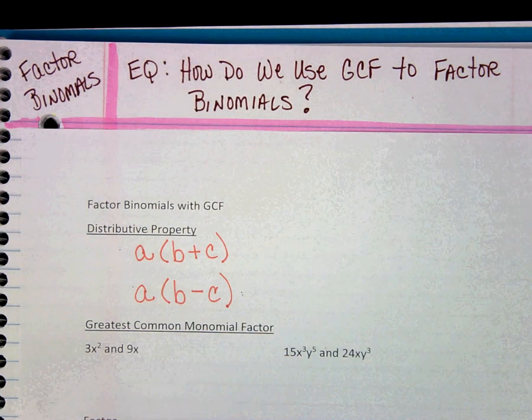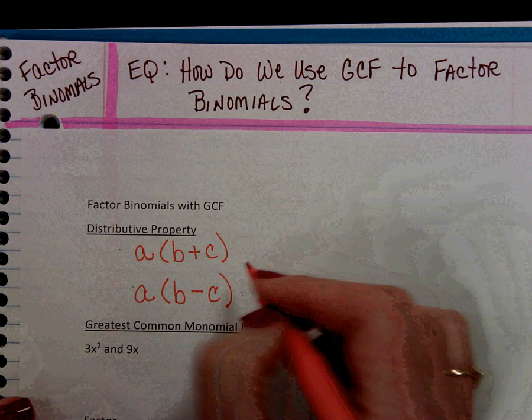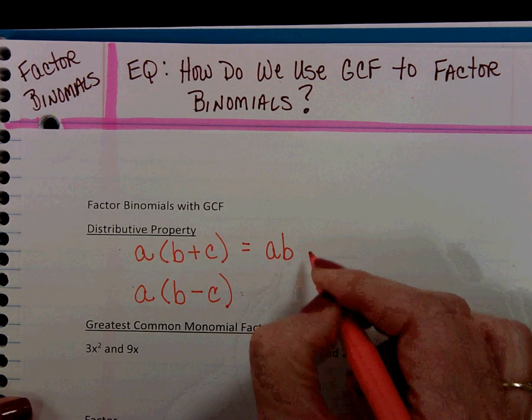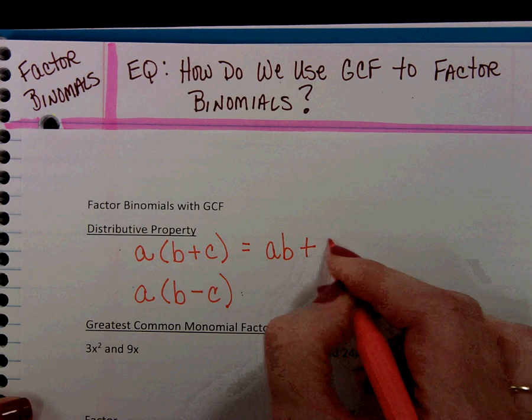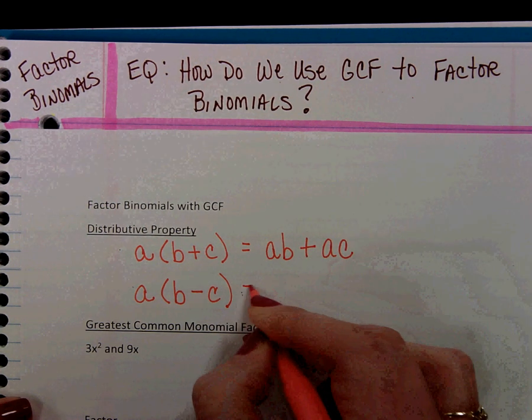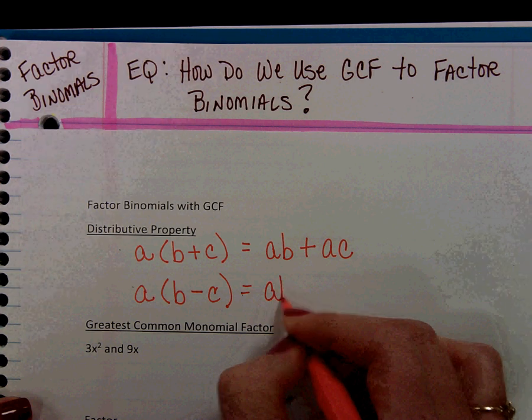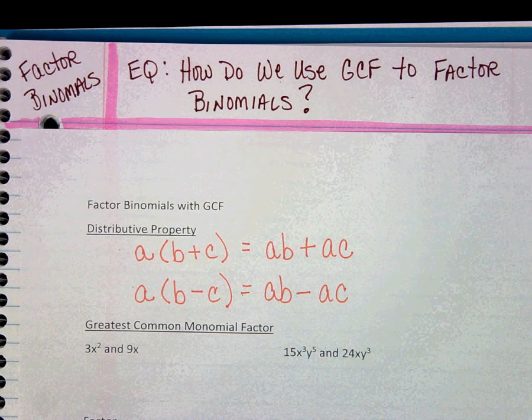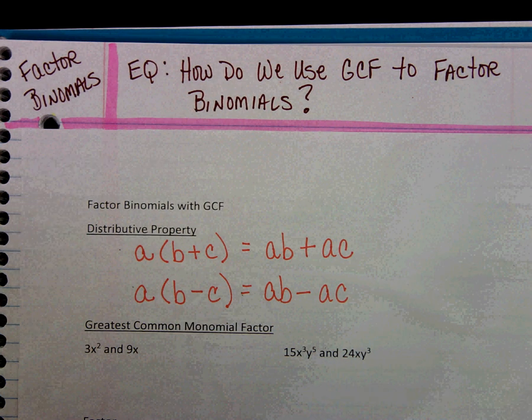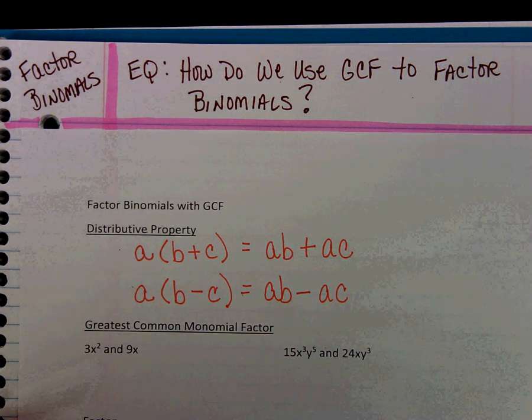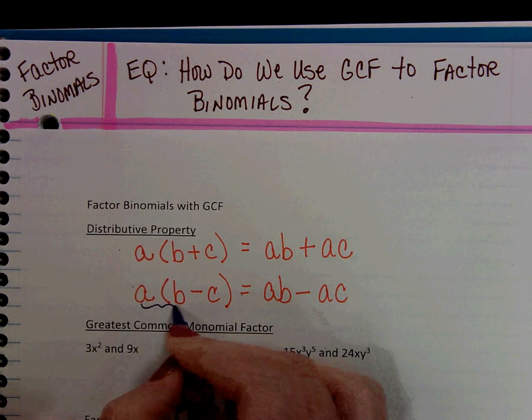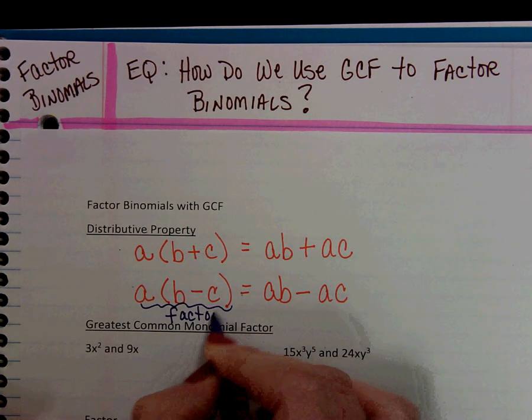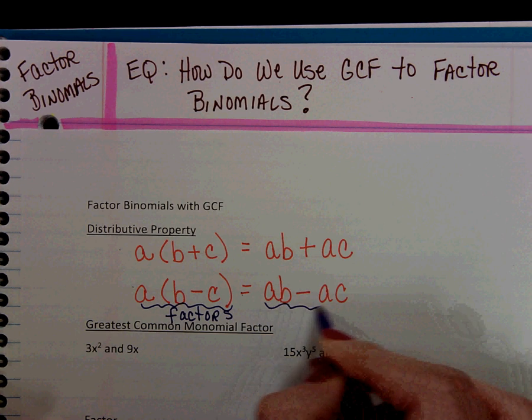This is where we've been starting at this point. Then it tells us that the product would be a times b plus a times c, or a times b minus a times c. We've been used to starting with the factors and getting the product.